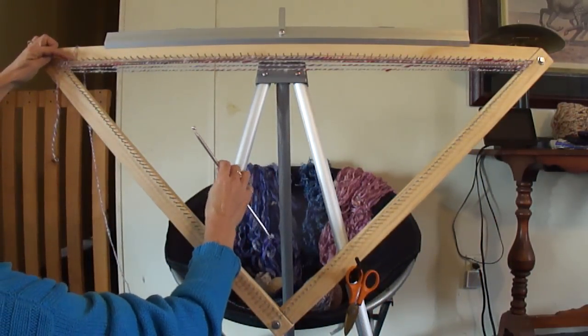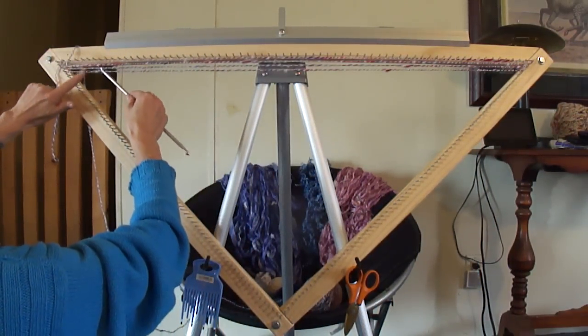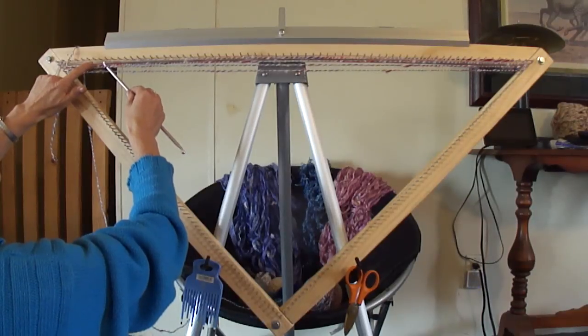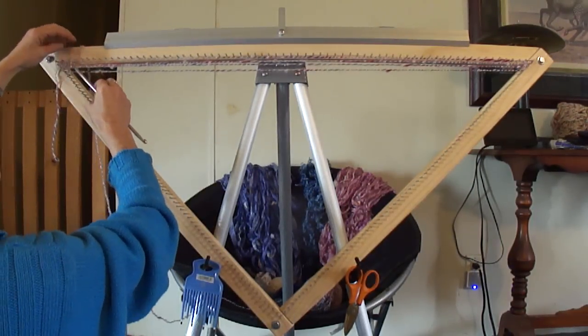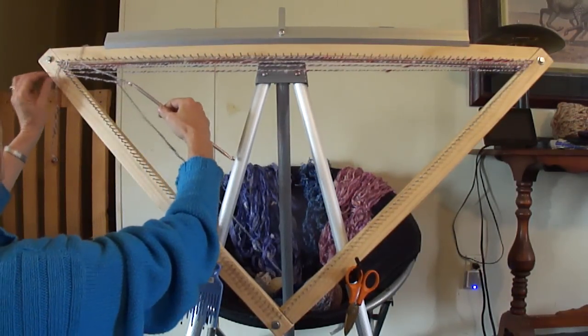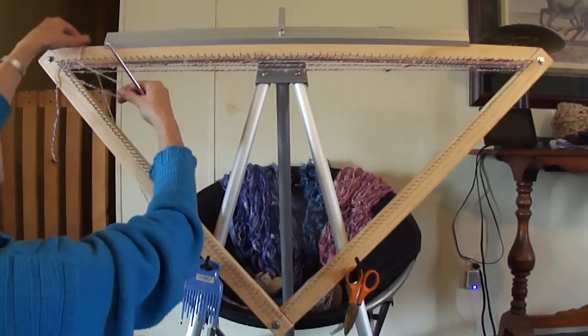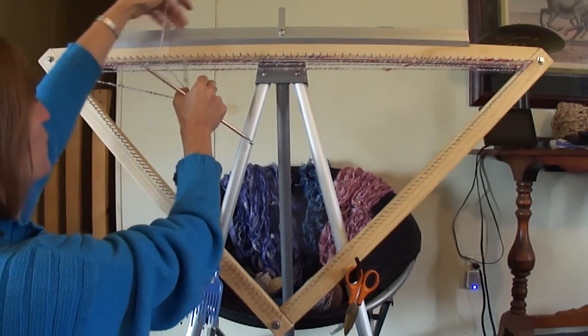So over on this side, we are on our second peg, and we're going to do some weaving. So we're over this one, under, over, under. Grab your little loop, pull it down, put it on that peg, and we're going back across.